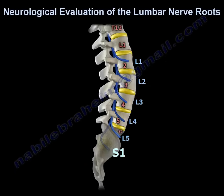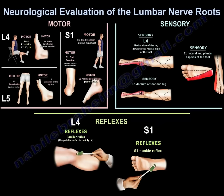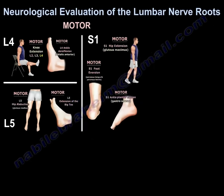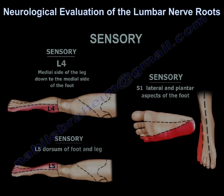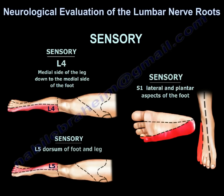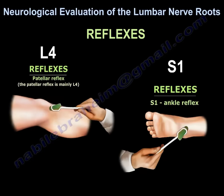There are three important nerve roots: L4, L5, and S1. You can check three things — sensory, motor, and reflexes. Motor: ankle dorsiflexion for L4; big toe extension or hip abductors (gluteus medius and minimus) for L5; ankle plantar flexion for S1. Sensation: medial side of the foot is L4, top of the foot is L5, lateral side of the foot is S1. Reflexes: patellar reflex is mainly L4, ankle reflex is S1.